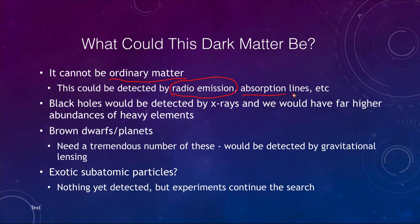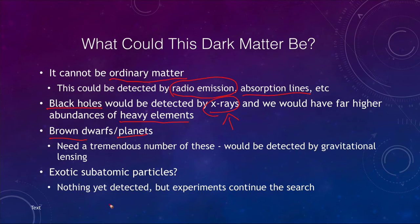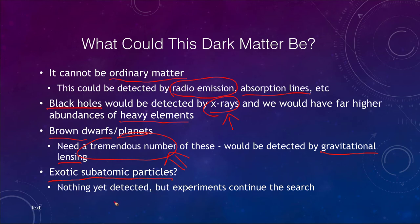We could also detect ordinary matter through absorption lines from starlight traveling through it. Could it be black holes? Black holes would be hard to see, but if they collect matter they give off X-rays which we could find, and calculations show we would have far higher abundances of elements heavier than hydrogen or helium than we do. What about brown dwarfs or planets? Their low mass means we'd need a tremendous number of them, and they'd still be detected by gravitational lensing. Exotic subatomic particles remain undetected but are still being searched for.